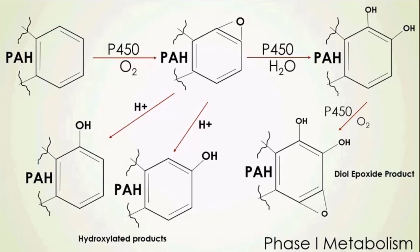We can also form a ring structure with two hydroxyl groups, which we call a diol. That epoxide undergoes another oxidation reaction to add two hydroxyl groups onto the ring. The diol can undergo further oxidation using P450 enzymes to form the diol epoxide product, and this particular metabolite can form DNA adducts — it can bind to DNA and prevent or disrupt replication, leading to a carcinogenic effect. These hydroxylated metabolites are called phase one metabolites, products of what we call phase one metabolism.